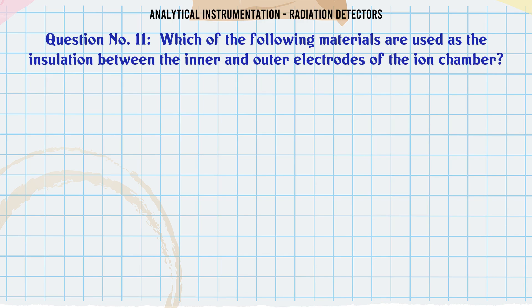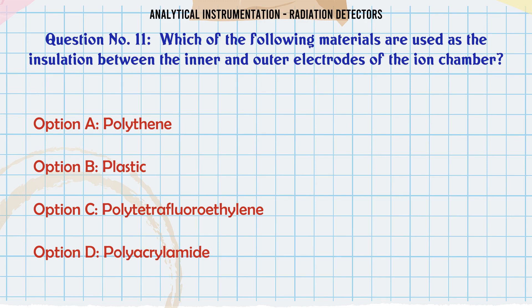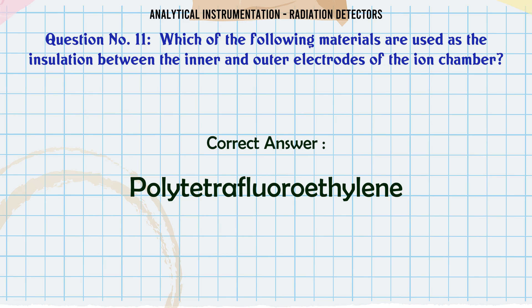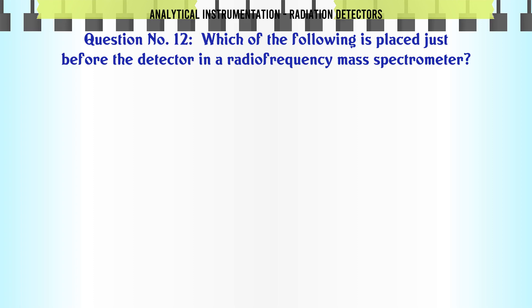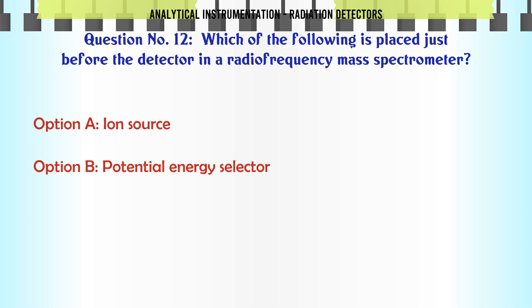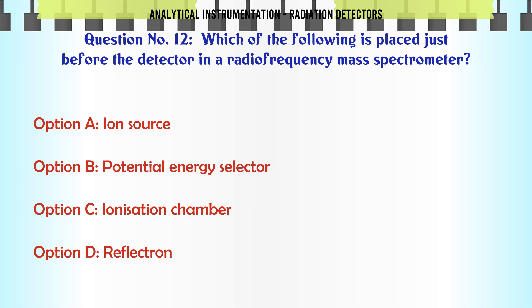Which of the following materials are used as the insulation between the inner and outer electrodes of the ion chamber? A. Polythene. B. Plastic. C. Polytetrafluoroethylene. D. Polyacrylamide. The correct answer is Polytetrafluoroethylene.